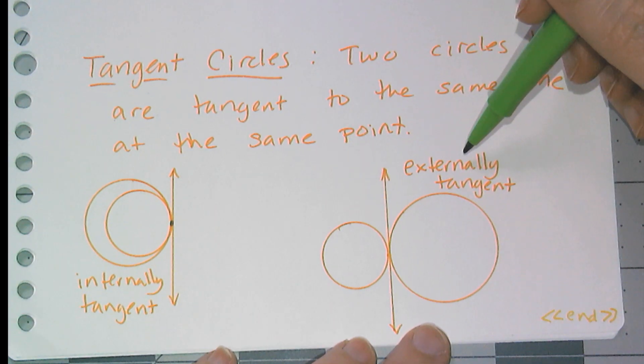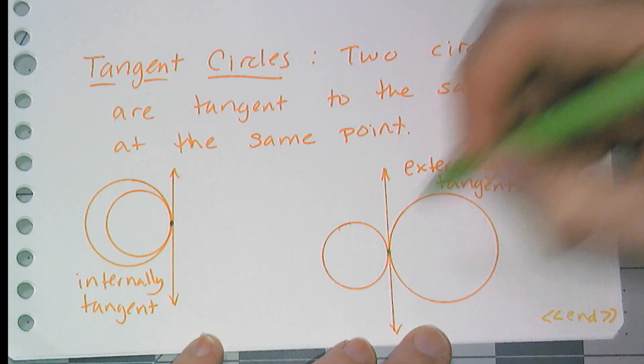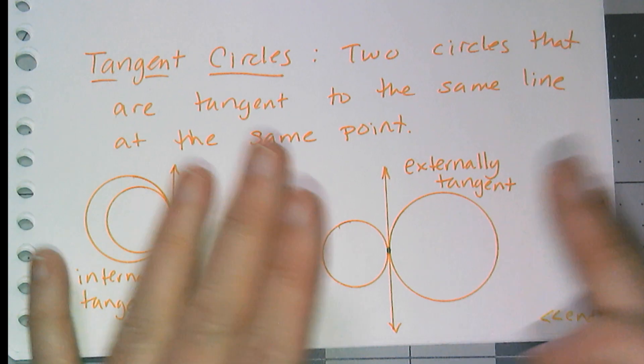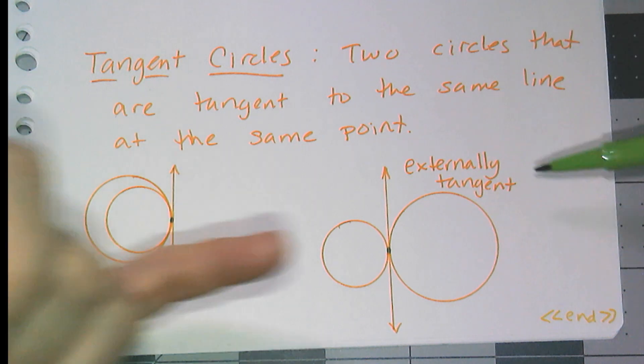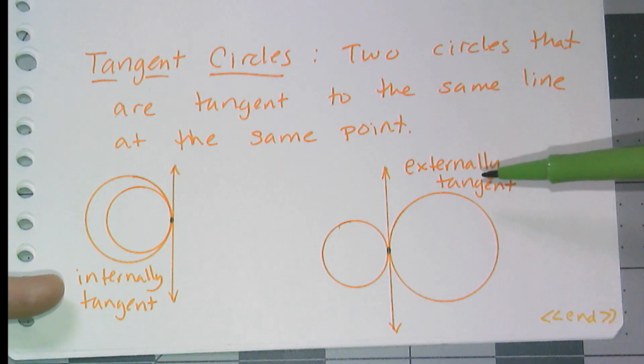Externally tangent means opposite sides of the tangent. So this is the point of tangency. One circle is tangent on the right side. One circle is tangent on the left side. They can be the same congruent circles. They can be different congruent or different circles. They don't have to be congruent at all. But we call these externally tangent. We call these internally tangent. These keywords internally, externally can help you draw your pictures if you have tangent circles. That's it. Let's go.